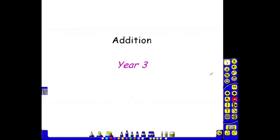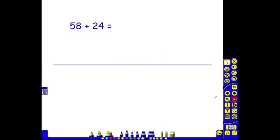Year 3 edition. In year 3, what has been learned in year 1 and 2 is built upon. In this example, we have 58 add 24.